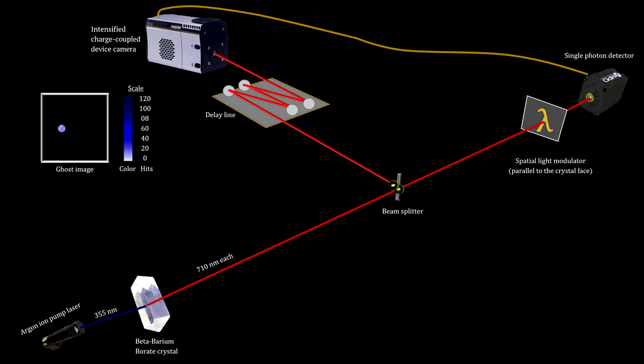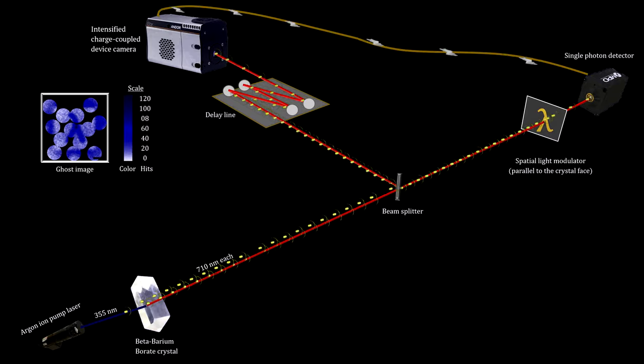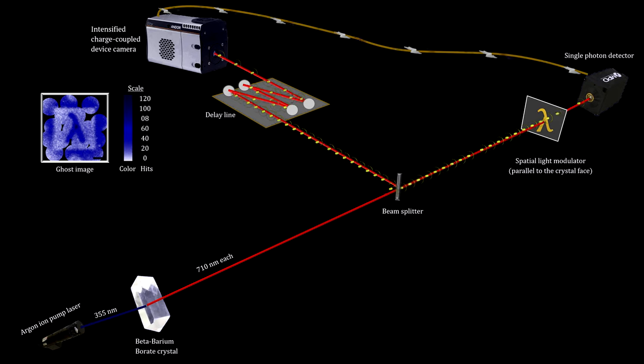If the camera gets a photon without a signal, it ignores it. As you can see, over time, the lambda image is constructed. This is called a ghost image. The light that creates it never encountered the object itself.